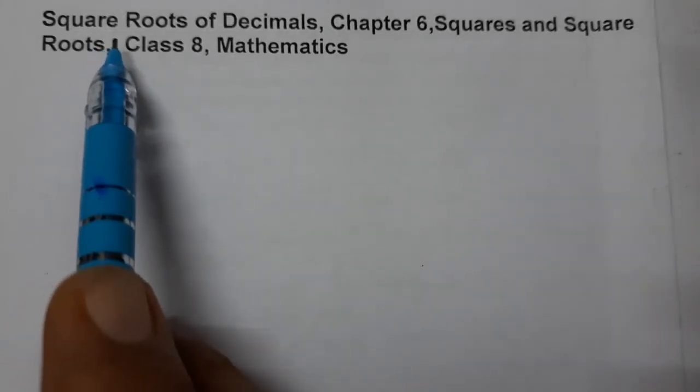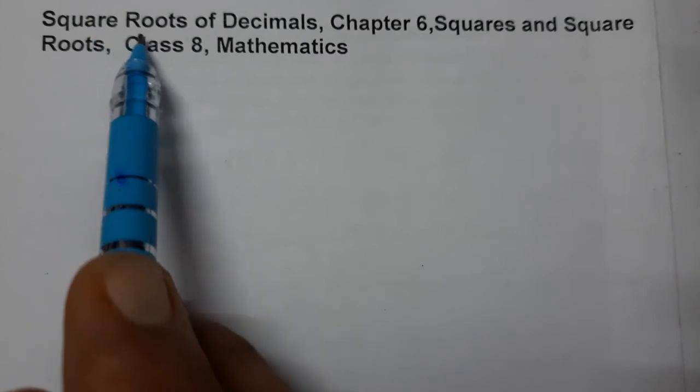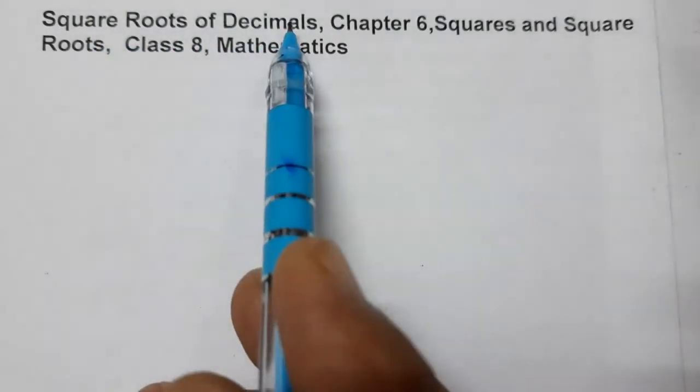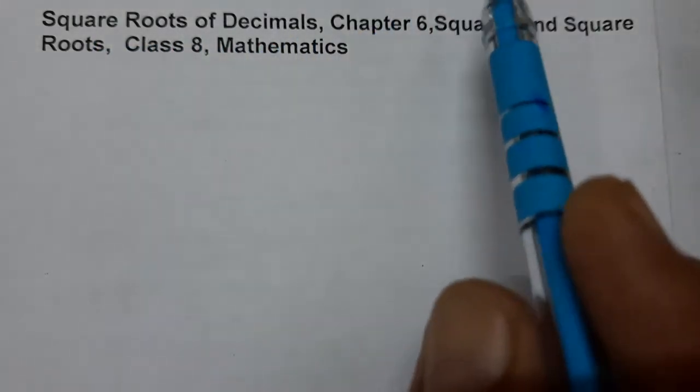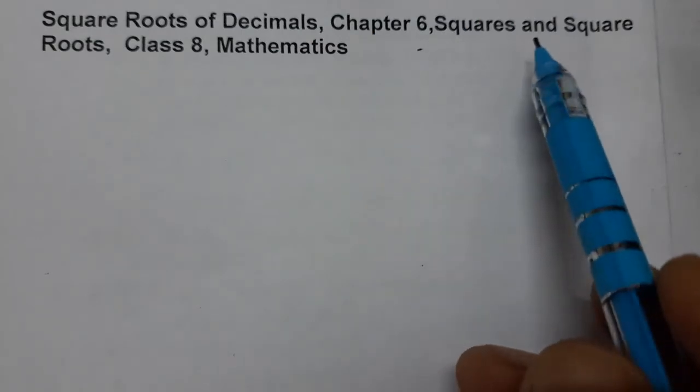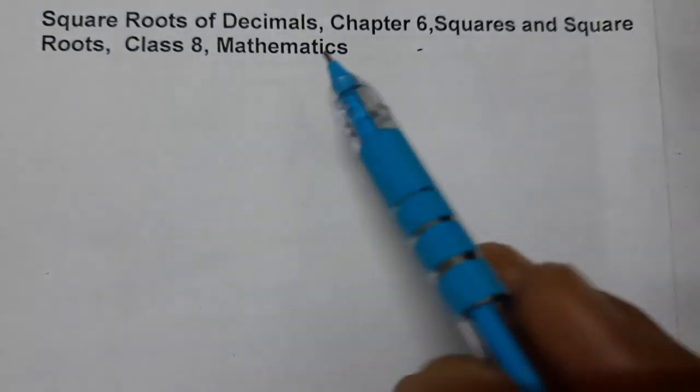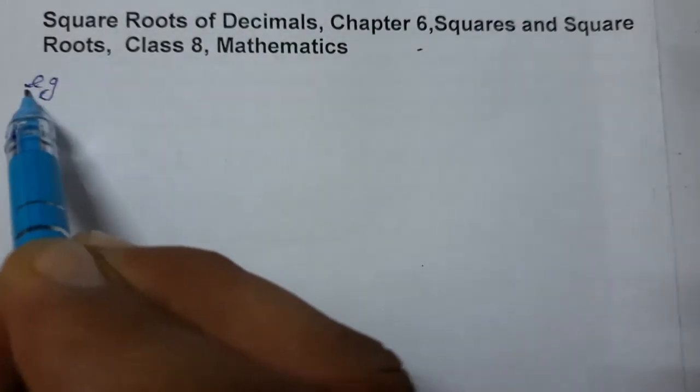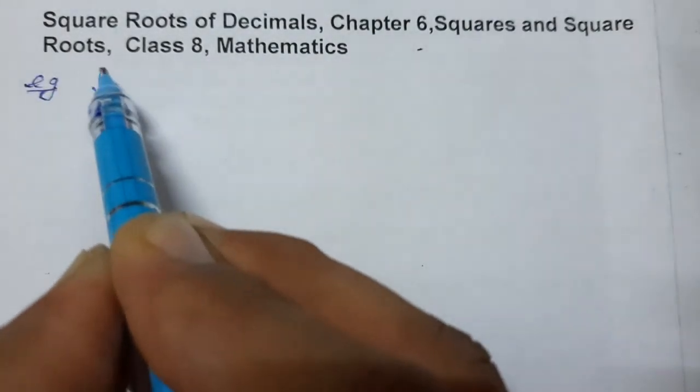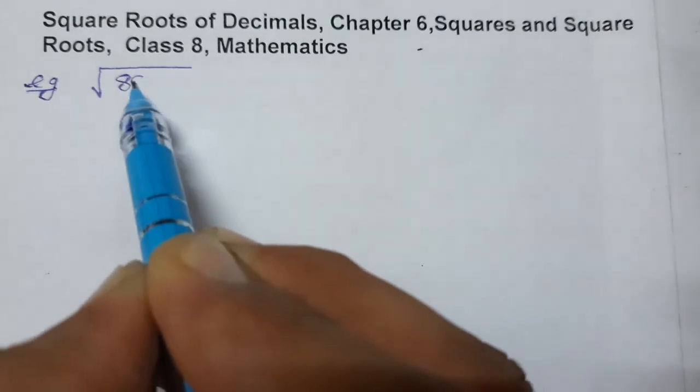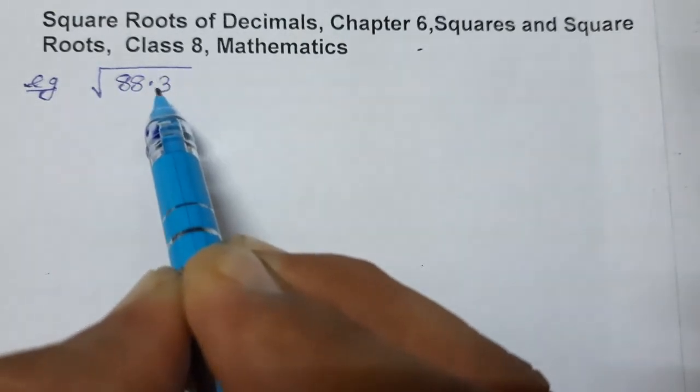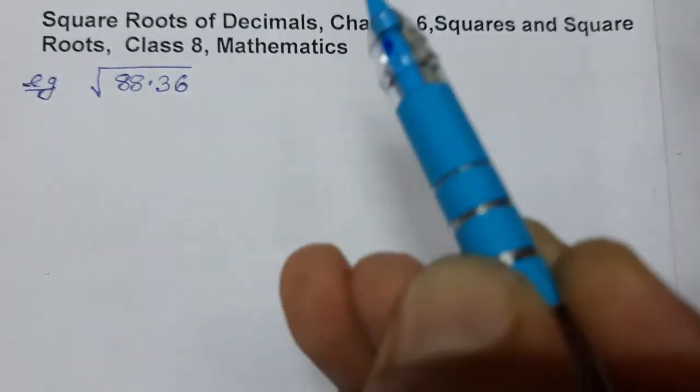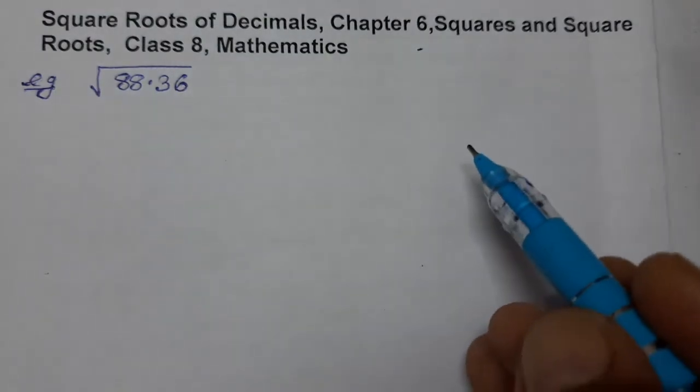Hello students, today we are going to learn about how to find square root of decimal numbers by division method. Chapter number six, Squares and Square Roots, Class 8 Mathematics. So let's take one example: 88.36. We have to find out the square root of 88.36. So how to find out? First of all, as usual, you have to make the arrangement.